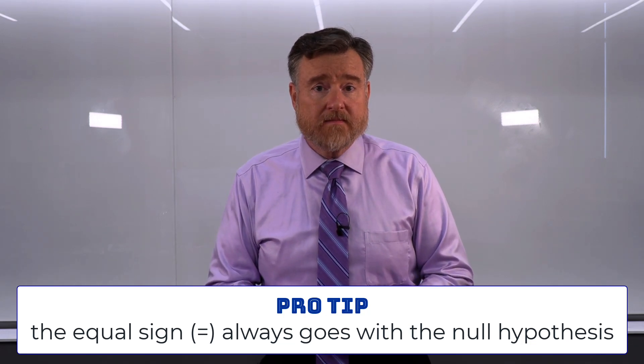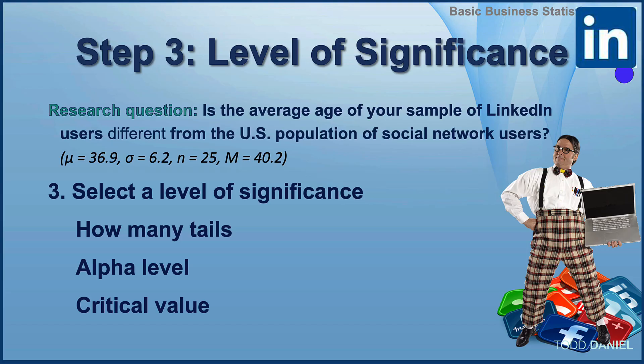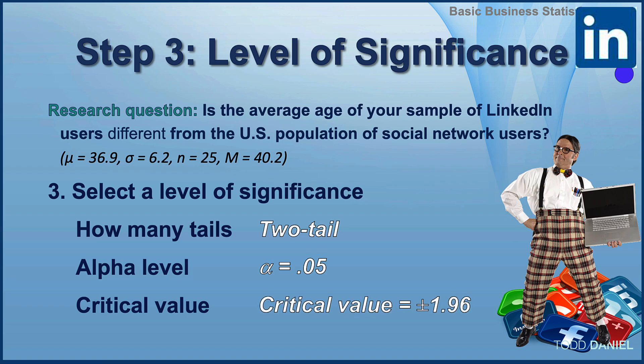Step three: specify a level of significance — a criteria for how much evidence we require to determine statistical significance. We're using a two-tailed test with alpha set equal to 0.05. For a two-tailed z-test with an alpha of 0.05, the critical value will always be ±1.96 because we are using a normal distribution of scores.